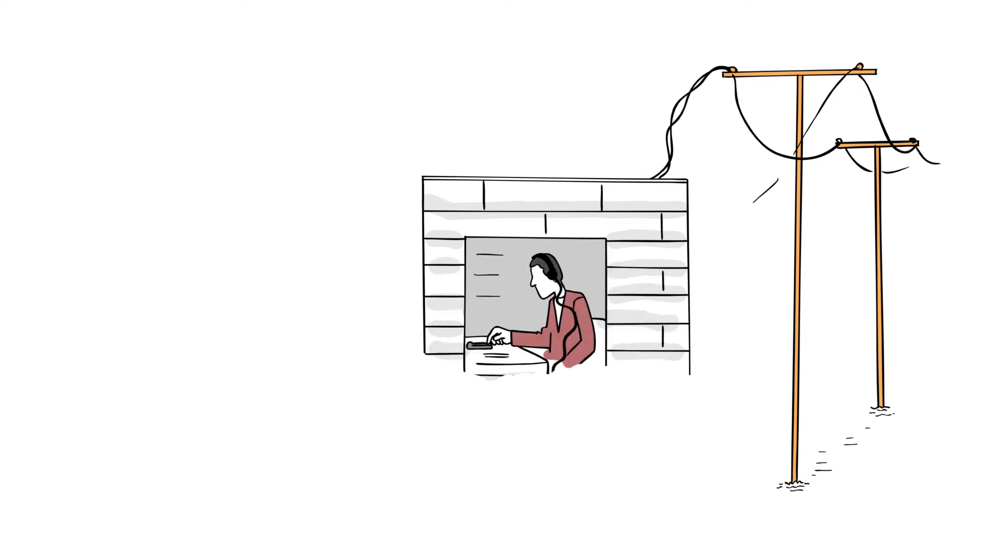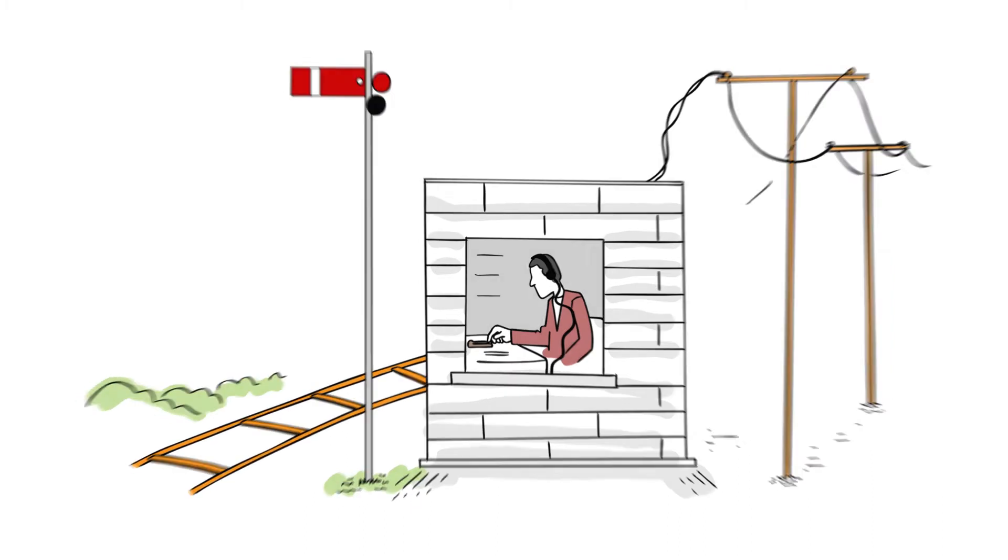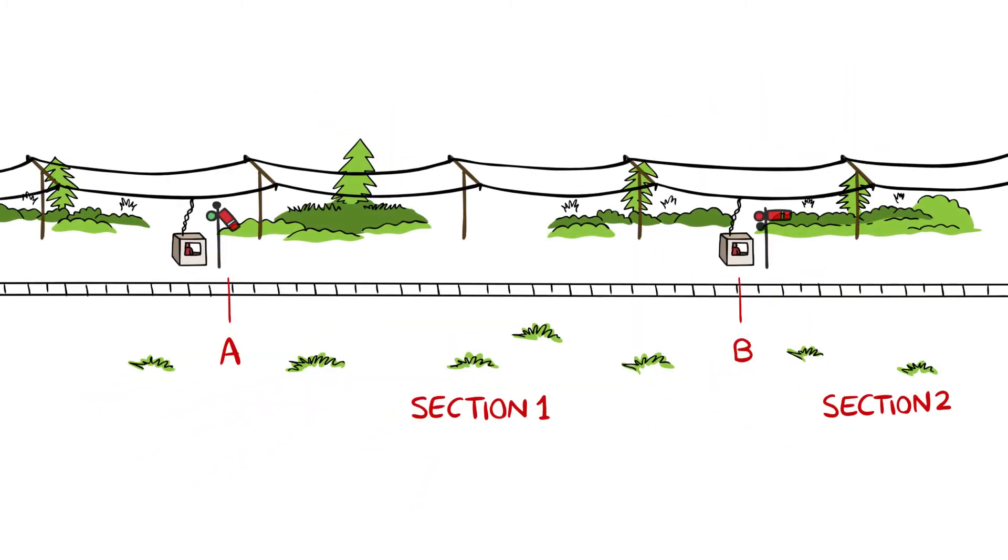The telegraph allowed the policemen to communicate with each other when trains entered or exited a track section which gave certainty that a track section is clear before another train is permitted to enter. For example, Policeman A allows train 1 to enter track section 1 and telegraphs Policeman B that a train has entered the track section.